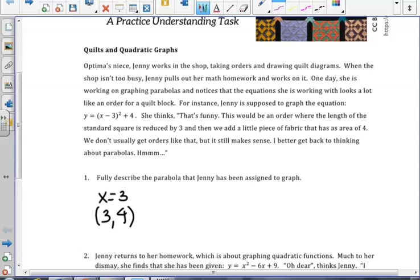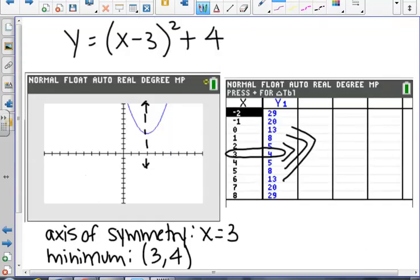We can tell the minimum value by examining a table of values for our function. If we look at a graph of this function, we can see that the minimum value is indeed 3, 4, and that the axis of symmetry would be the line x equals 3. If we examine a table of values, we notice that the y values are symmetric around the value 3, 4. For example, we can see that 5 and 5, 8 and 8, and 13 and 13 match up on each side. The reason this happens is because a parabola is symmetric along the axis of symmetry. Therefore, our x value for our axis of symmetry needs to be 3.